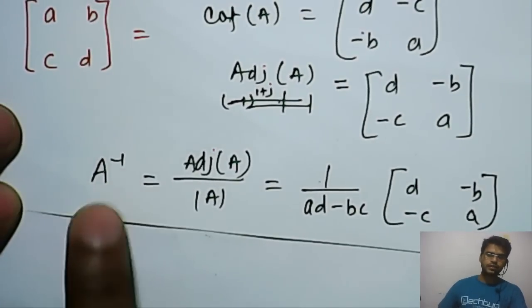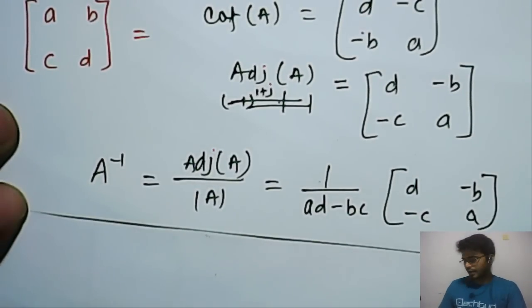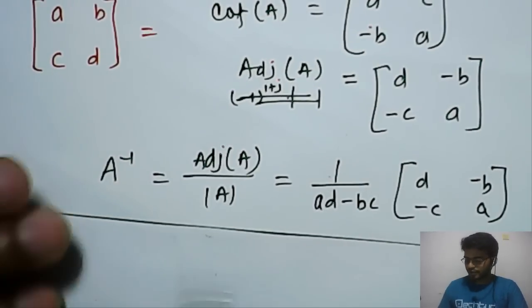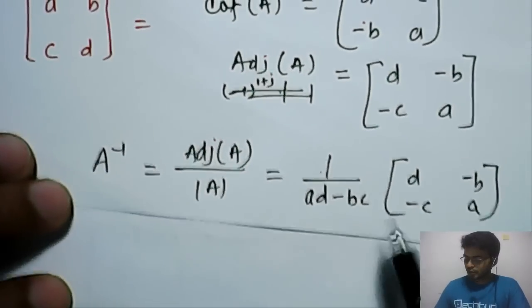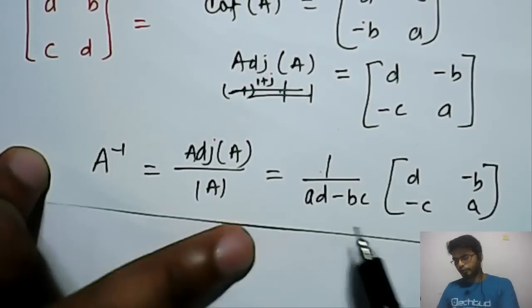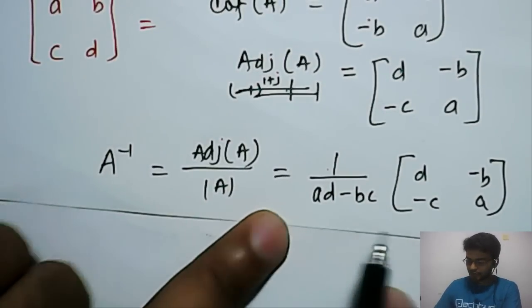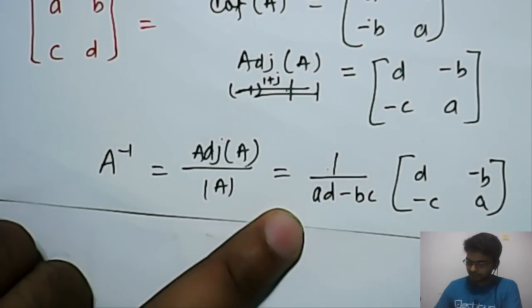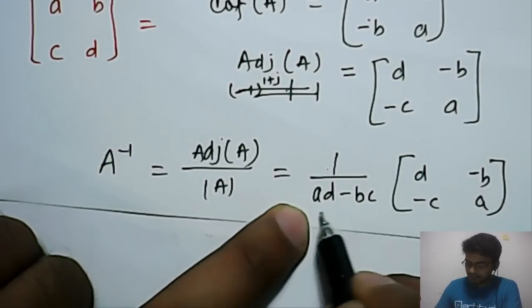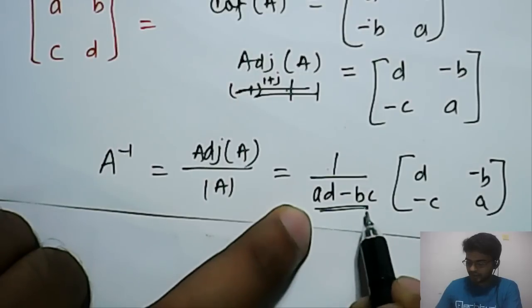Similarly, if you have 3 by 3 matrix, you can proceed in similar fashion. Just to save time, I took it 2 by 2. So, if you can remember also, if it is 2 by 2 matrix, it will be sometimes time saving to solve some other bigger problem. So, what you have to do is, this is basically determinant.